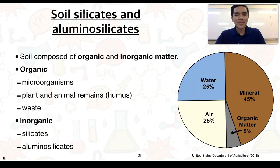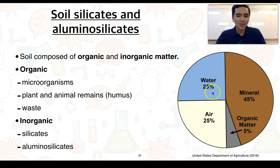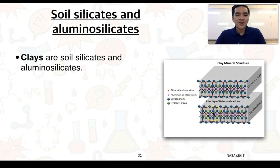We need to explain how cations on the surface of soil silicates and aluminosilicates become available to plants. Soil is composed of both organic and inorganic matter. The organic matter can consist of microorganisms, plants and animal remains, which we call humus, as well as waste. The inorganic components consist of silicates and aluminosilicates, which make up a large component. There is also water and air. Clay is the term we use to refer to soil silicates and aluminosilicates.